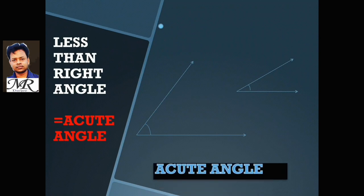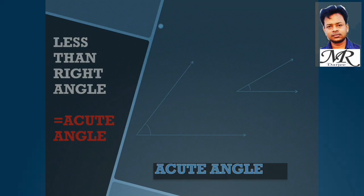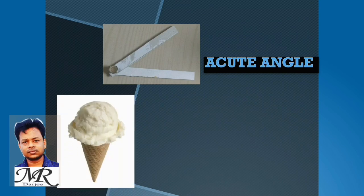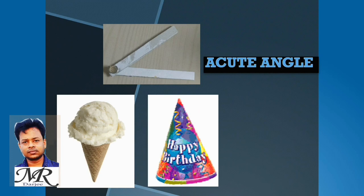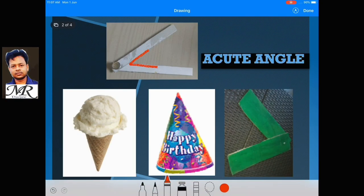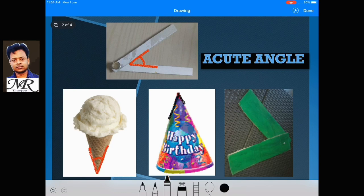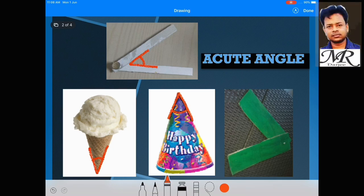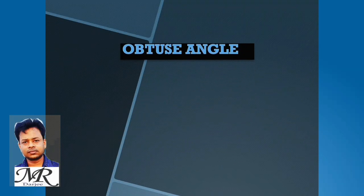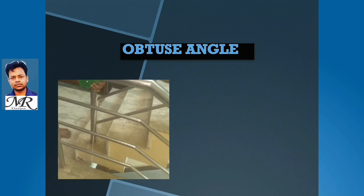Less than a right angle — this angle is called an acute angle. These are examples of acute angles. Acute angle here, and in this picture, here also, and here also we can see acute angles.